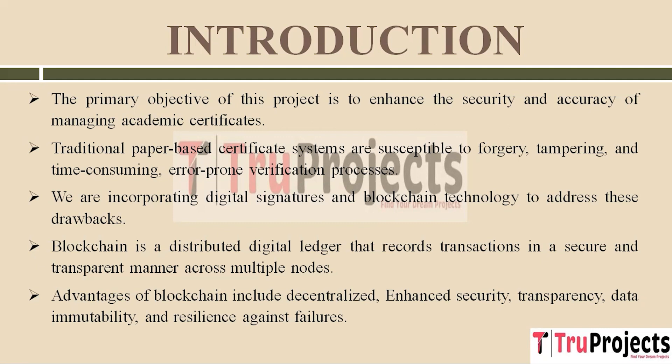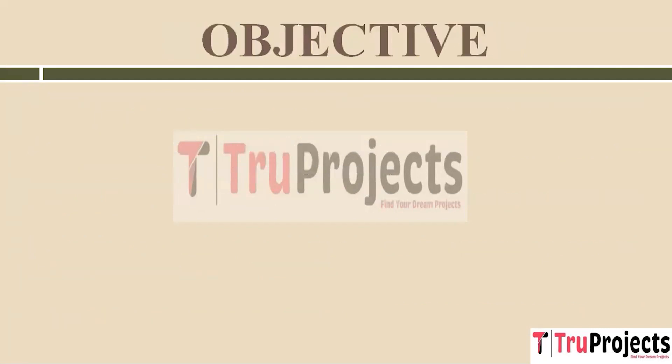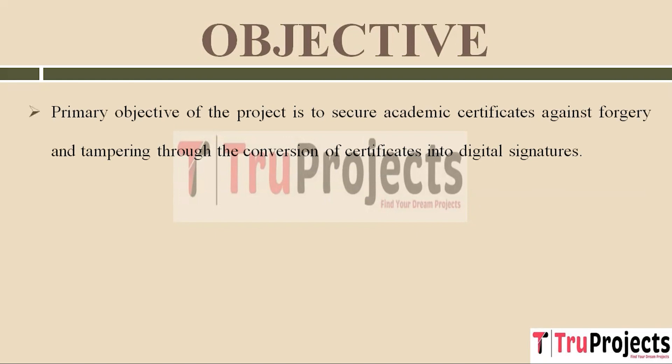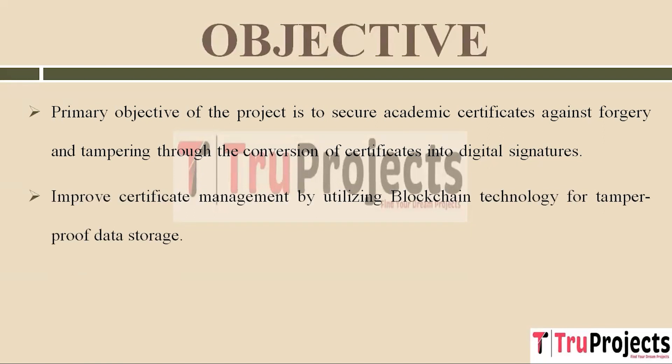Finally, blockchain is resilient to failures because even if some nodes go down, others continue to maintain the data. The primary goal of this project is to make academic certificates highly secure by turning certificates into digital signatures, which make it extremely difficult for anyone to forge or tamper with them. We are also using blockchain technology to ensure that once a certificate is stored, it cannot be changed or tampered with, guaranteeing the safety and accuracy of certificate records.